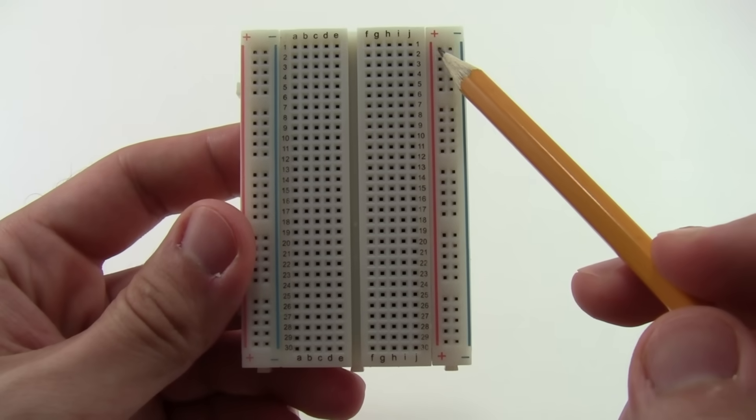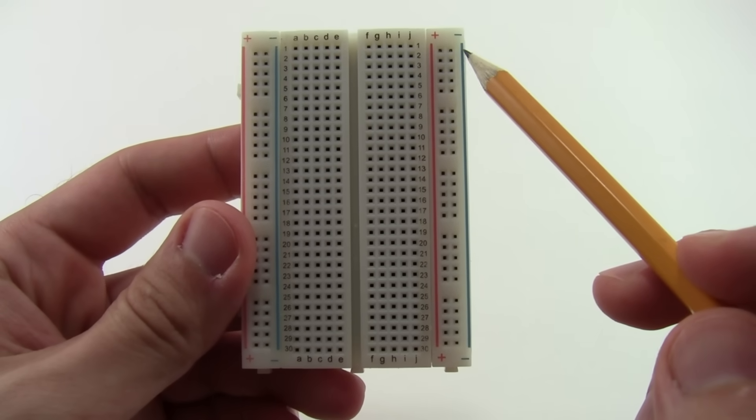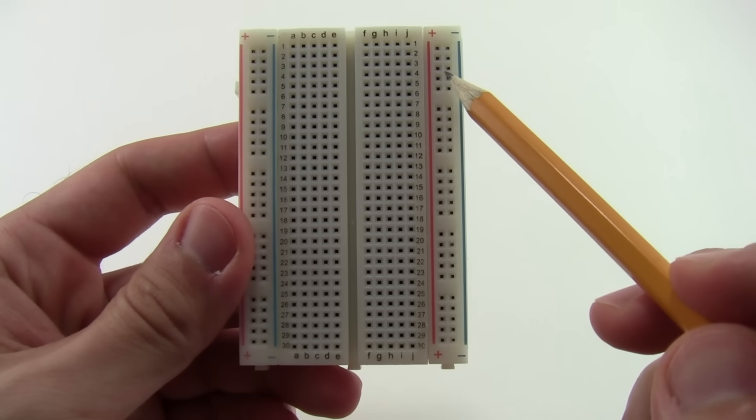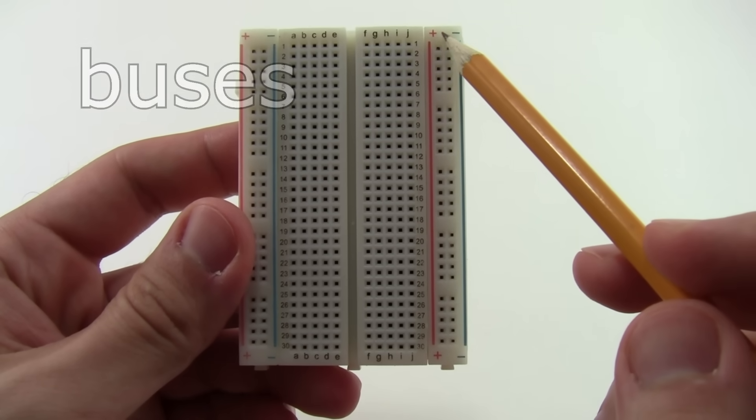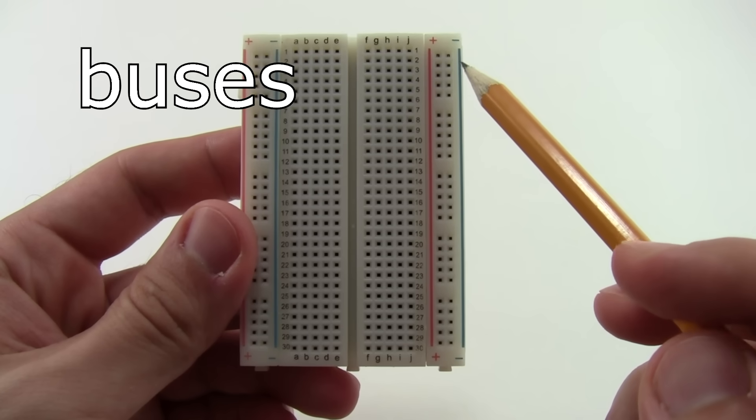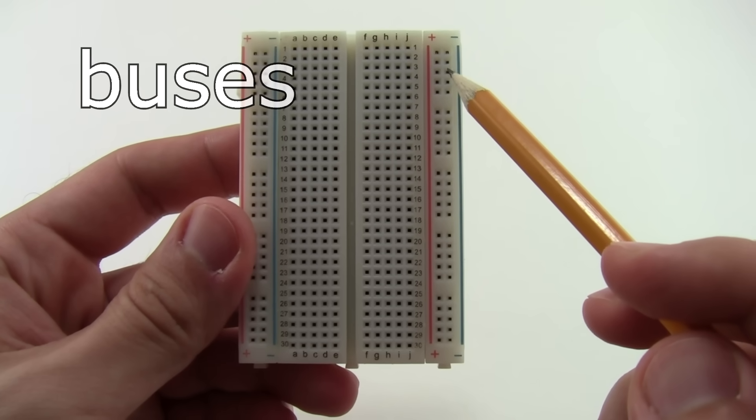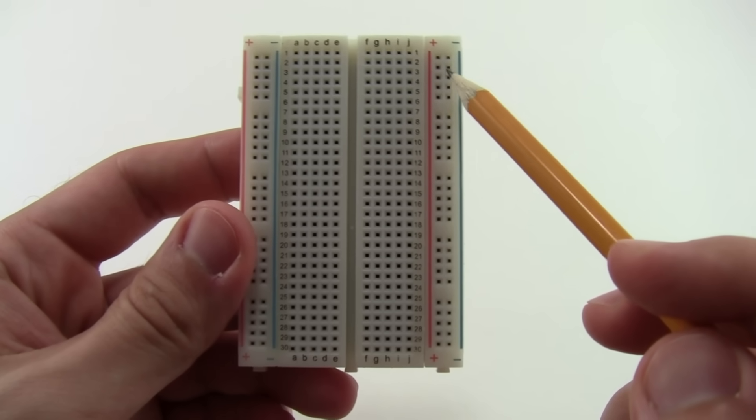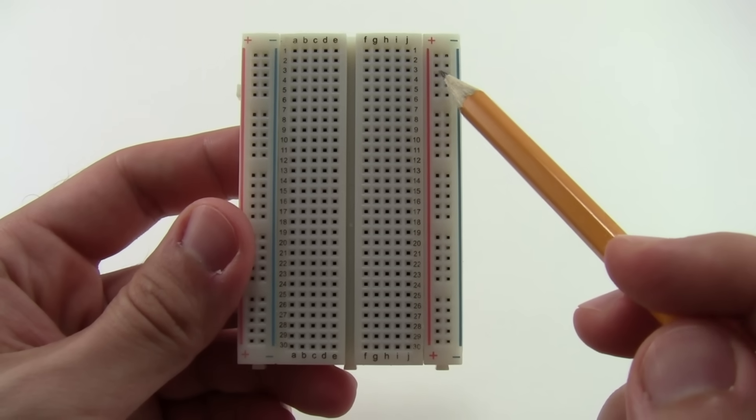There are also long strips on either side of your breadboard that are usually labeled with red and black or red and blue lines, and also a plus or minus sign. These are called either buses or rails and are used to deliver power to your entire circuit. Typically, the red one marked with a plus sign will connect to the positive battery terminal, and the black or blue one marked with a minus sign will connect to a negative battery terminal.